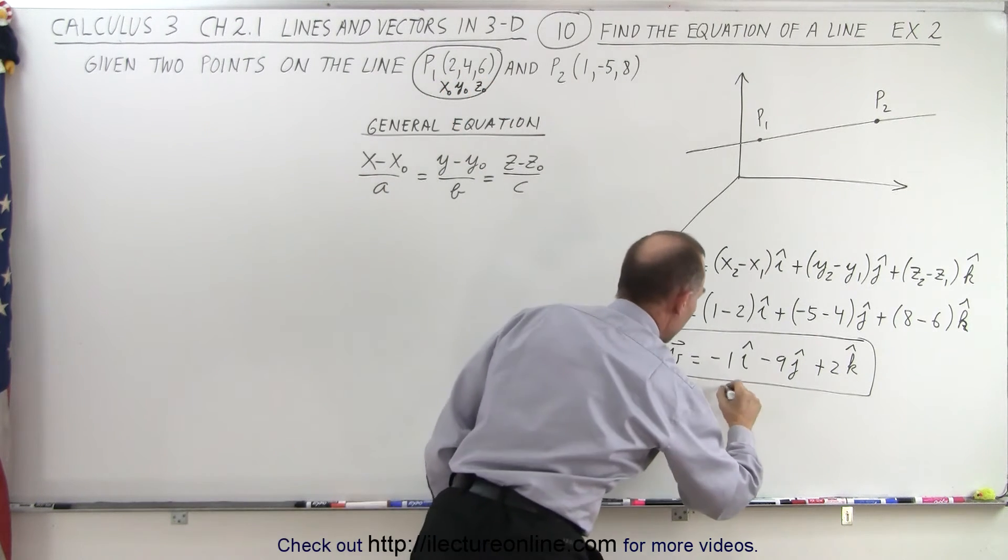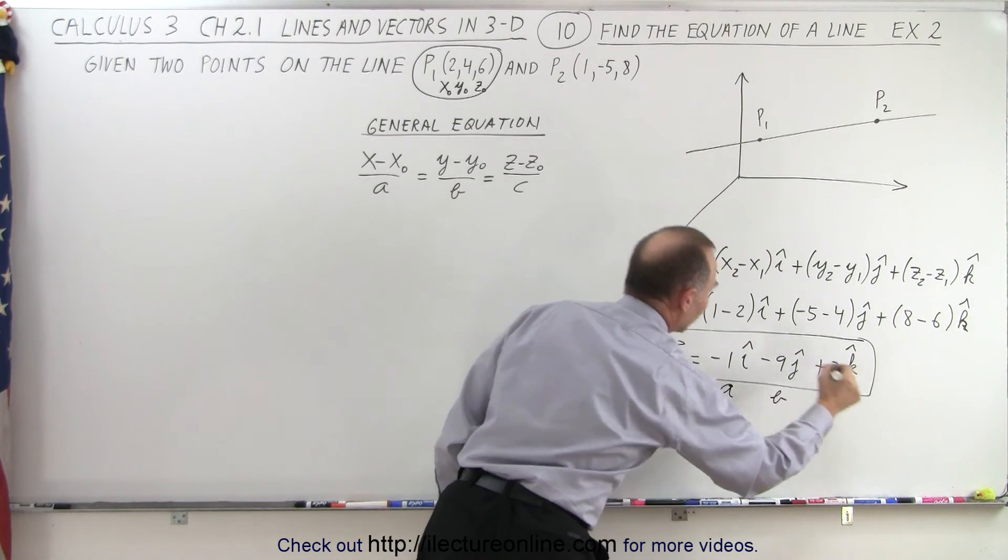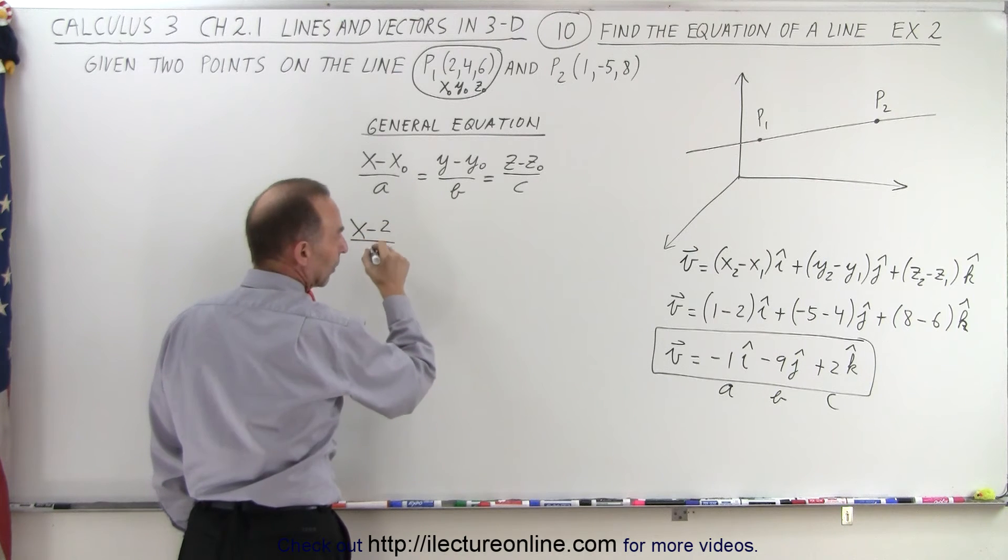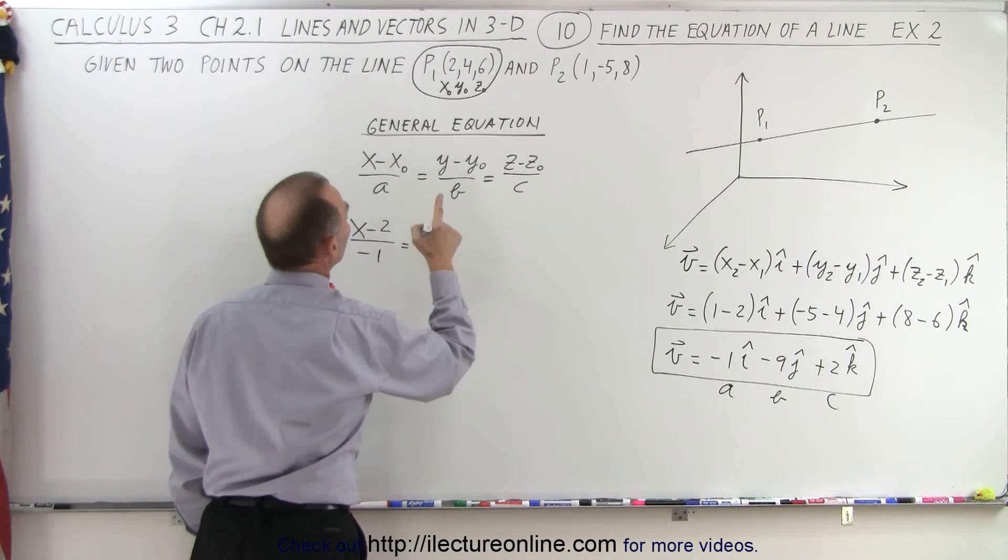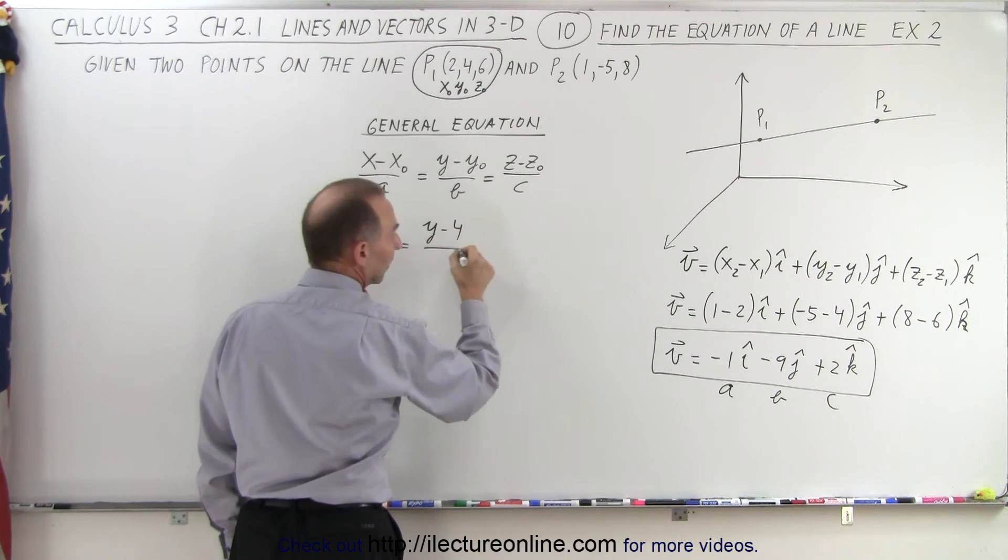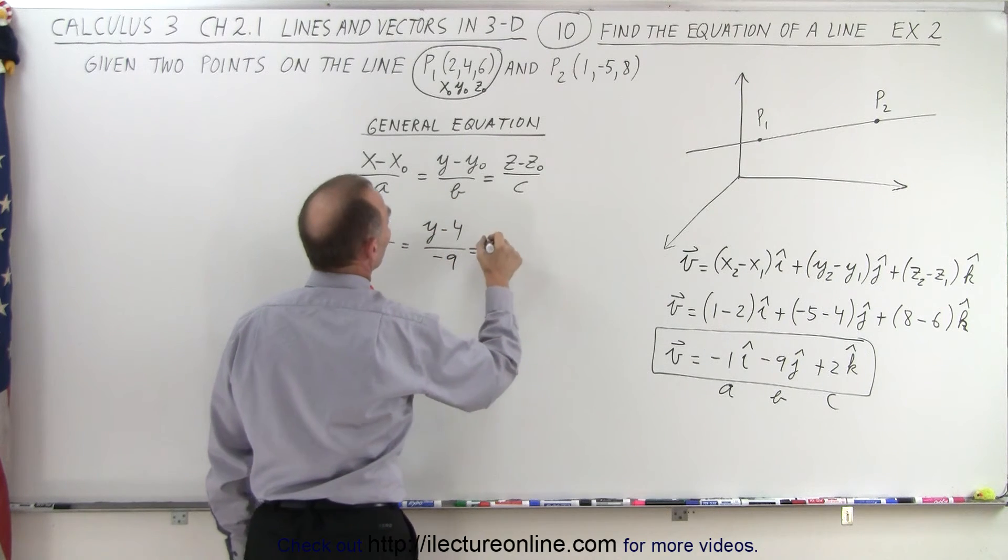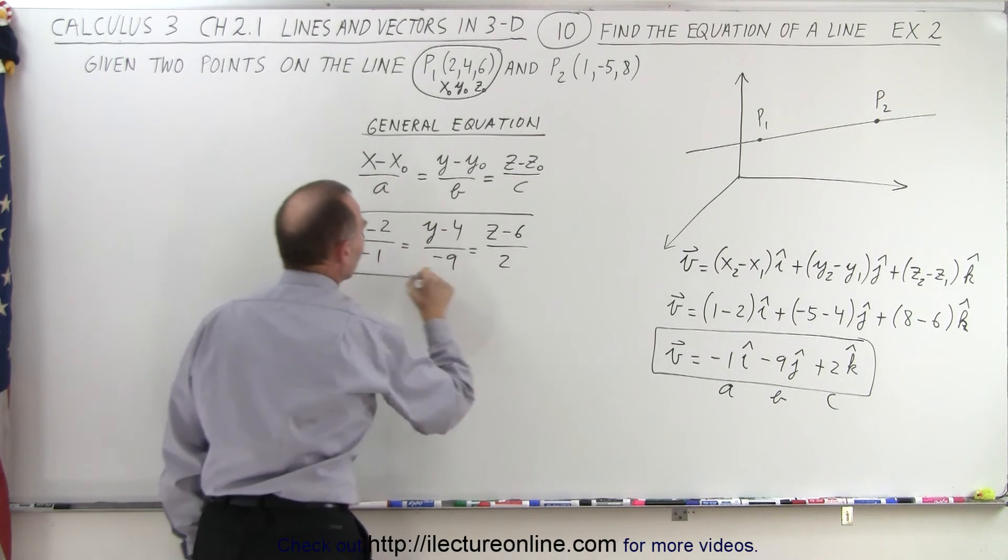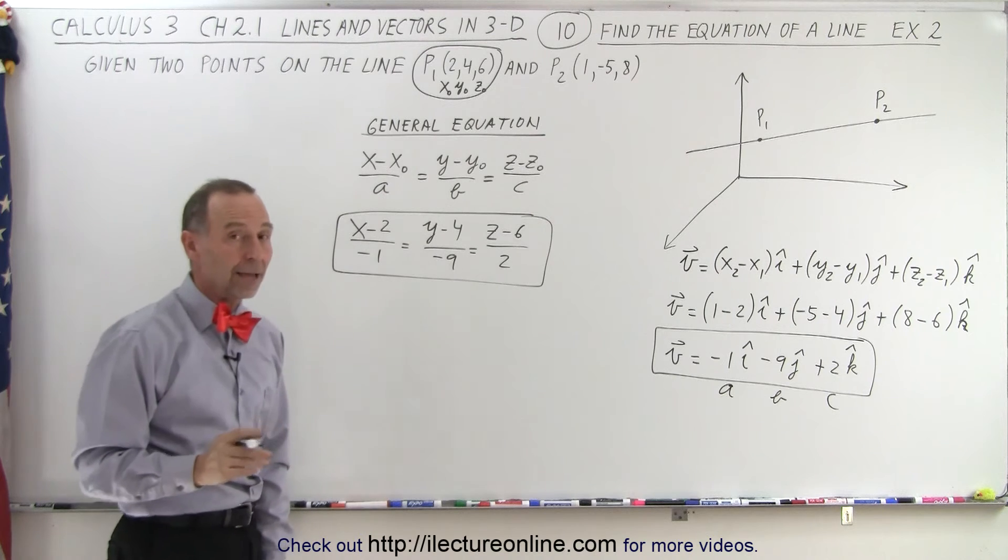And this here would be a, b, and c. And let's plug that in. So we have x minus 2 divided by a, which is minus 1, equals y minus 4 divided by minus 9 equals z minus 6 divided by 2. And here is the equation representing the line.